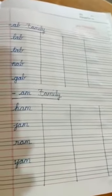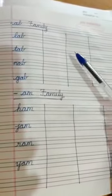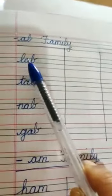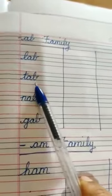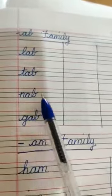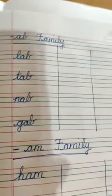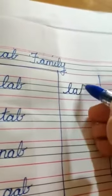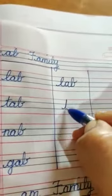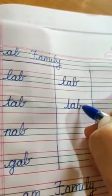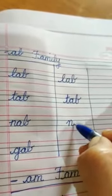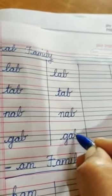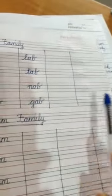In this page, I have given you two families because we are only looking at a few words here. This is the AB family. L-A-B lab, T-A-B tab, N-A-B nab, G-A-B gab. How do we write it? Very neatly you should write, children. L-A-B lab, T-A-B tab, N-A-B nab, G-A-B gab. The child should write it three times.